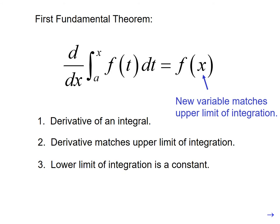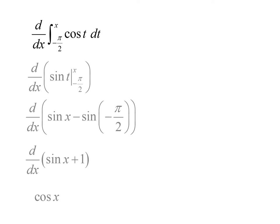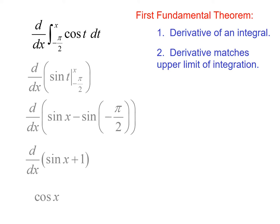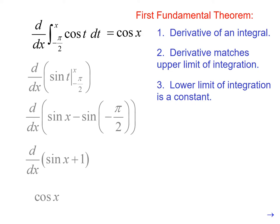That was the long way, which we just did — we found that the derivative is cosine. But if we use the First Fundamental Theorem, we have the derivative of an integral. The variable in the derivative matches the upper limit of integration — they're both x — and the lower limit of integration is a constant. So the derivative of the integral returns the function, and we just get cosine of x. We can skip all that middle work.